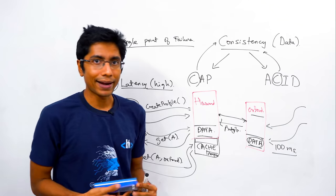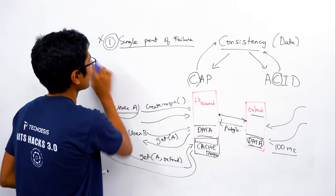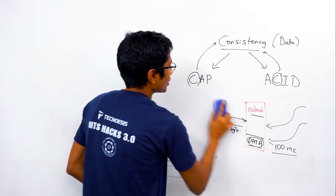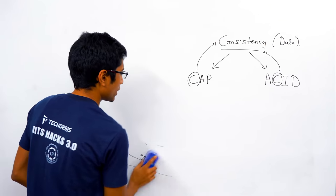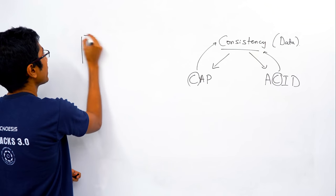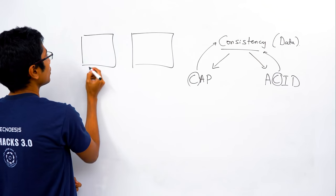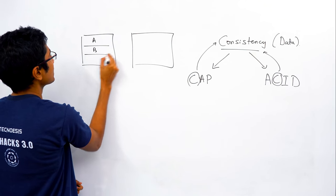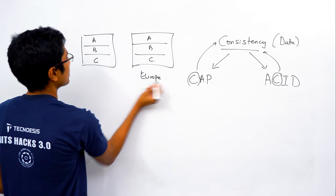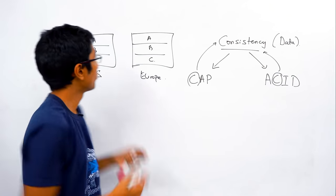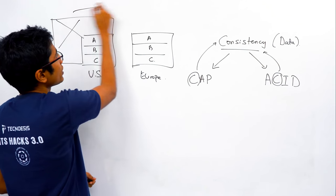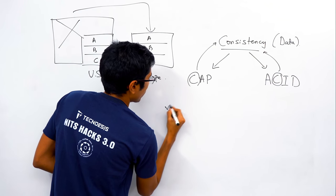There's only one practical way to solve this: get rid of the shyness about sharing data. If you have multiple copies of data, it solves a lot of your problems. First, the single point of failure: if student data A, B, and C is stored here in the US, and the exact same copy — A, B, and C — is stored in Europe, there's no more single point of failure. If the US server crashes, you can always connect to the European one.